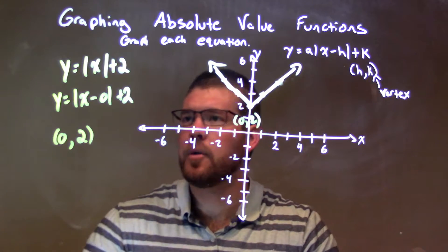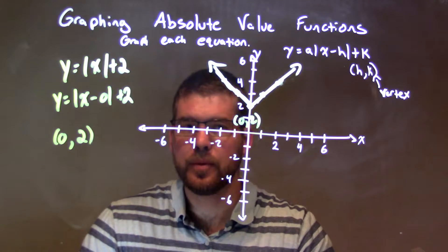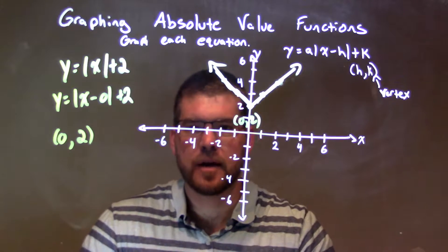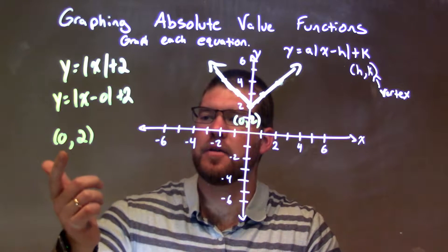So quick recap, we're given y equals the absolute value of x plus 2, okay? Well, we define the vertex first, so we rewrite it like this, and our vertex is 0,2. Now, put that right there.